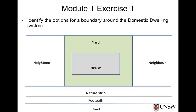In the first exercise for Module 1, we ask you to look at the options for a boundary for a domestic dwelling. Let's imagine that we're referring to a suburban house on a block of land that's sufficiently large for a front yard and a backyard. The house is set back from the road, and between the road and the house there is a footpath and a nature strip.